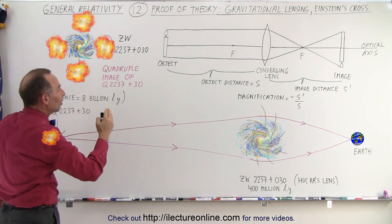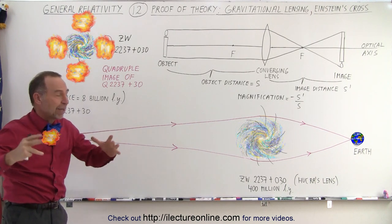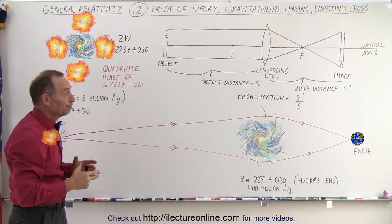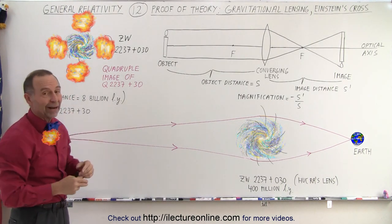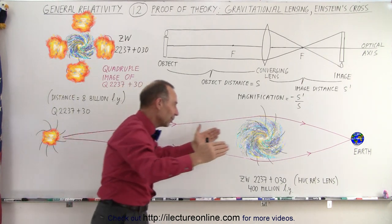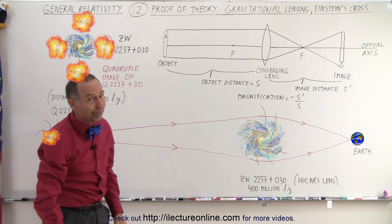And it's due to the gravitational lensing, which is due to the bending of space around any large object. And in this case, it's an entire galaxy that bends the light coming around it before it gets to the Earth. It's amazing.